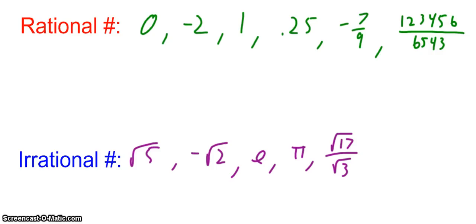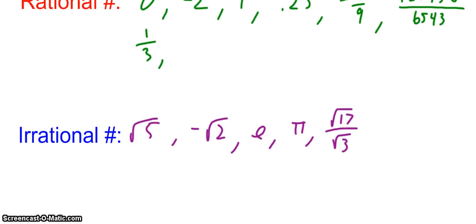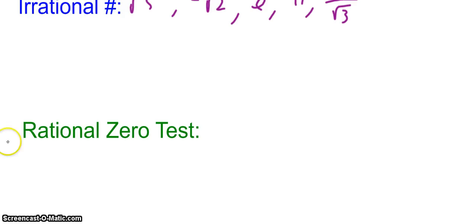Okay, so here are some examples of rational numbers that I came up with. Zero is a rational number. Negative 2, positive 1, 0.25, negative 7 ninths, whatever this is. Another good one that sometimes we confuse is, for example, 1 third. So that is an infinite decimal, but it's a repeating infinite decimal. So it's okay. Irrational numbers: square root of 5, negative square root of 2. Notice that I did not write square root of negative 2. That is different. E, pi, root 17 over root 3. Anything that is a non-repeating infinite decimal is irrational. E, if you don't remember, that's another constant like pi. It has to do with natural logs and exponential growth and exponential decay.